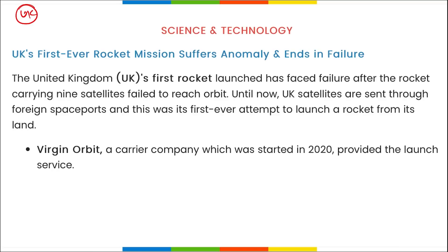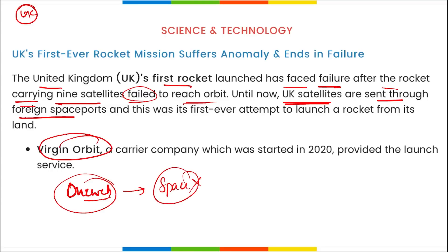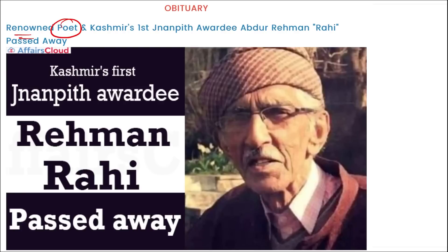The UK's first rocket mission ended in failure after the rocket carrying nine satellites failed to reach orbit. UK satellites are currently sent through foreign spacecraft. Virgin Orbit, a carrier company which started in 2020, provided the launch service but it was a failure mission for the UK.